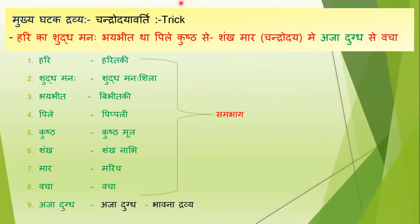Chandra Daya Varti ki jo trick hai — yeh mukhya ghatak drugs ke liye hai. Iske jo main ingredients hain, total eight ingredients hain, aur ek bhawna drug hai. Iski trick kya hai? Ek choti si story batati hoon, jis se aapko ye trick yaad karne mein aasan ho jaye gi.